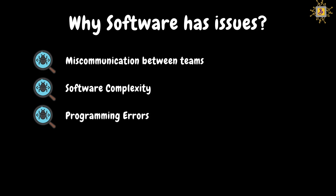The fourth reason is frequent requirement changes. If the business team keeps changing the software requirements, developers have to upgrade and change accordingly. When requirements change frequently, there are many chances for issues to appear in the software.